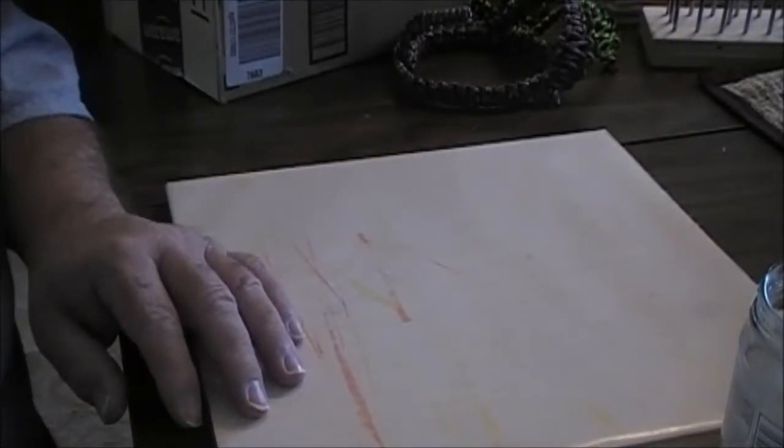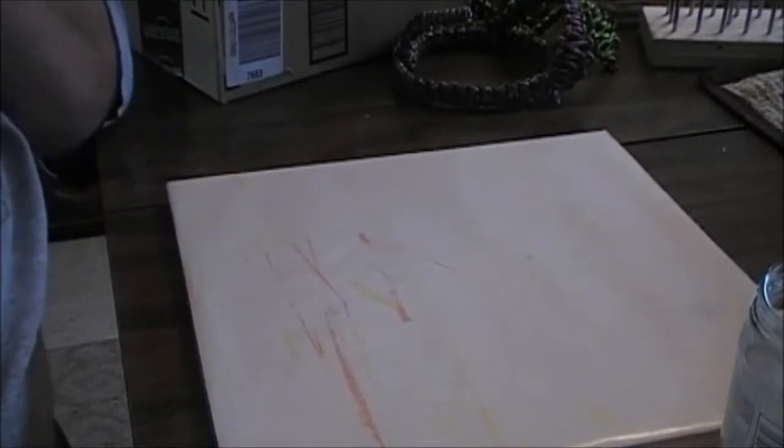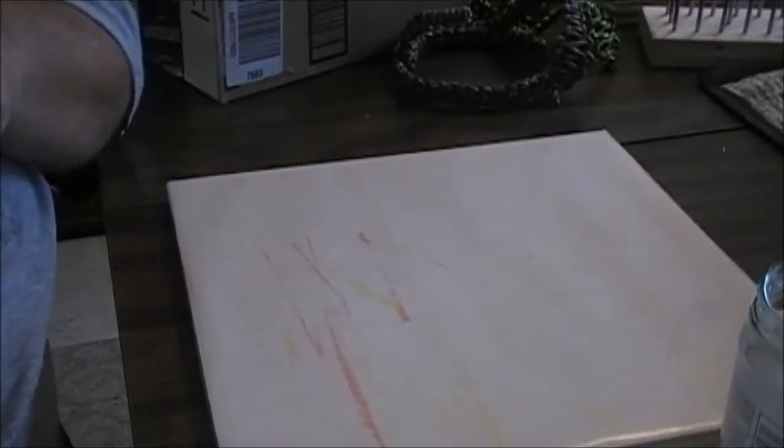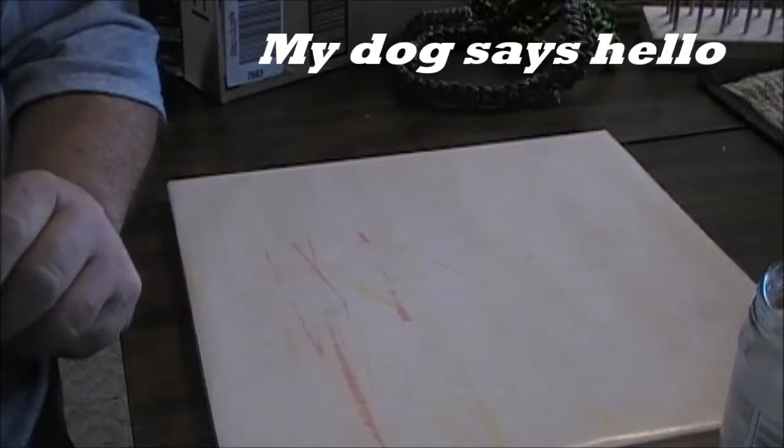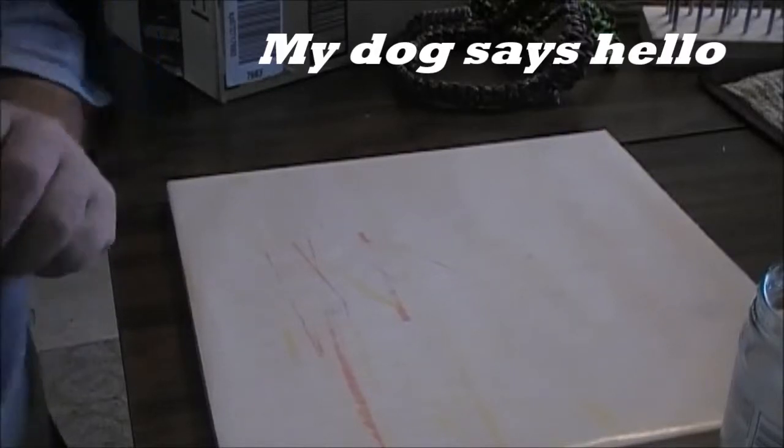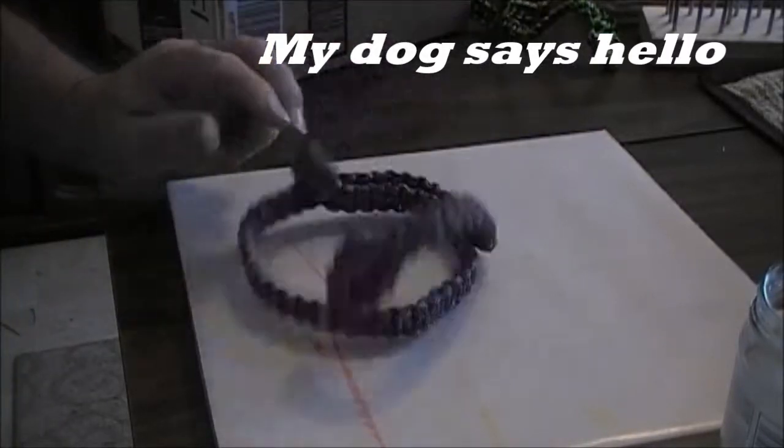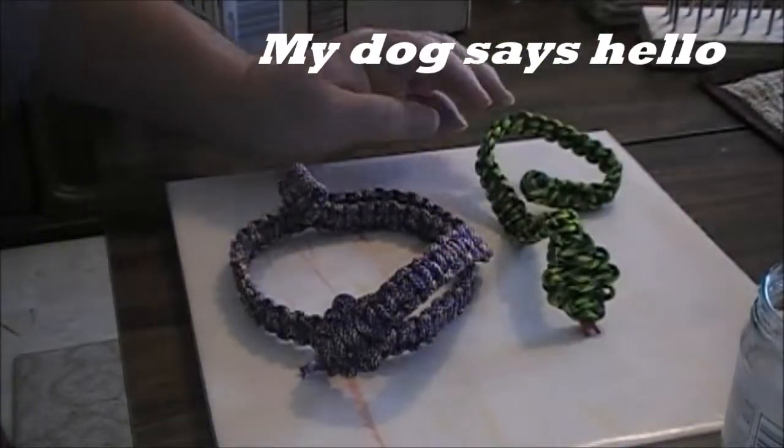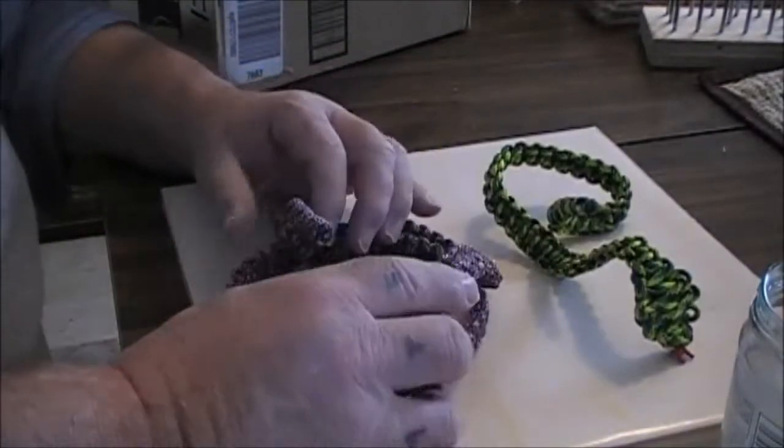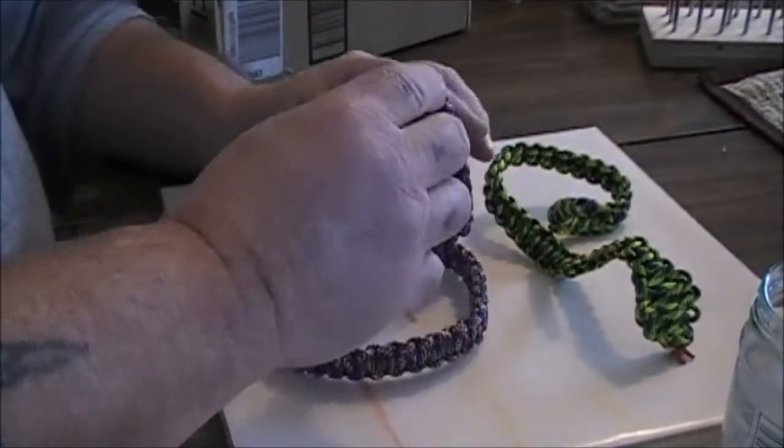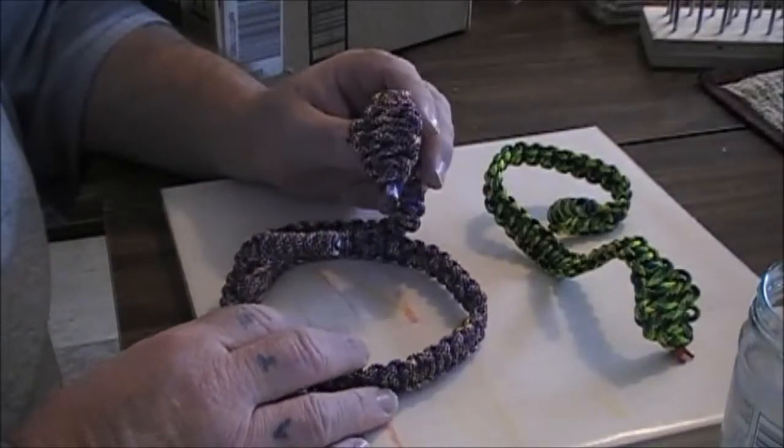Hey, hey big buddy 291 here. I'm going to show you how to stiffen paracord to make it stiff. I made a couple of snakes out of 550 paracord. See how flimsy it is? You can probably see it better like that.